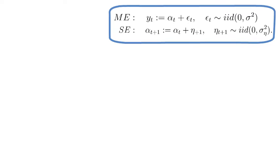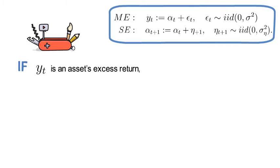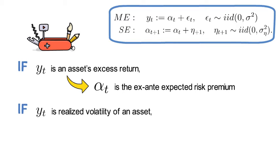This framework captures many interesting applications. If yt is an asset's excess return, alpha t would stand for the ex-ante expected risk premium. For yt being realized volatility, alpha would be its ex-ante expected volatility, and so on.